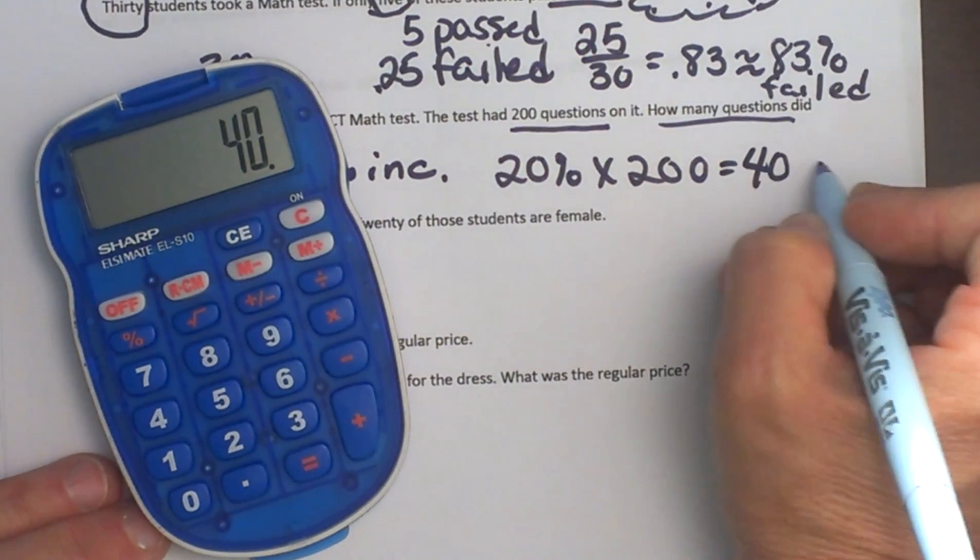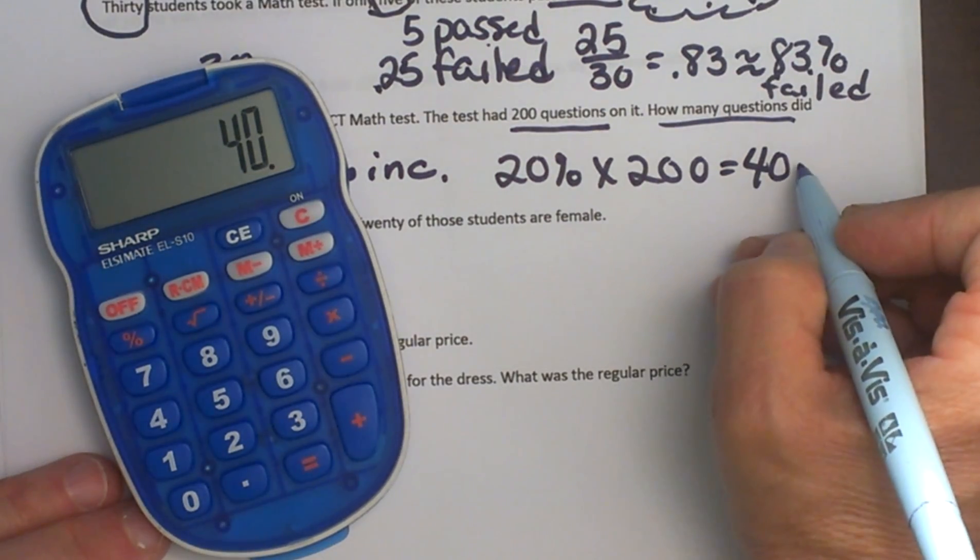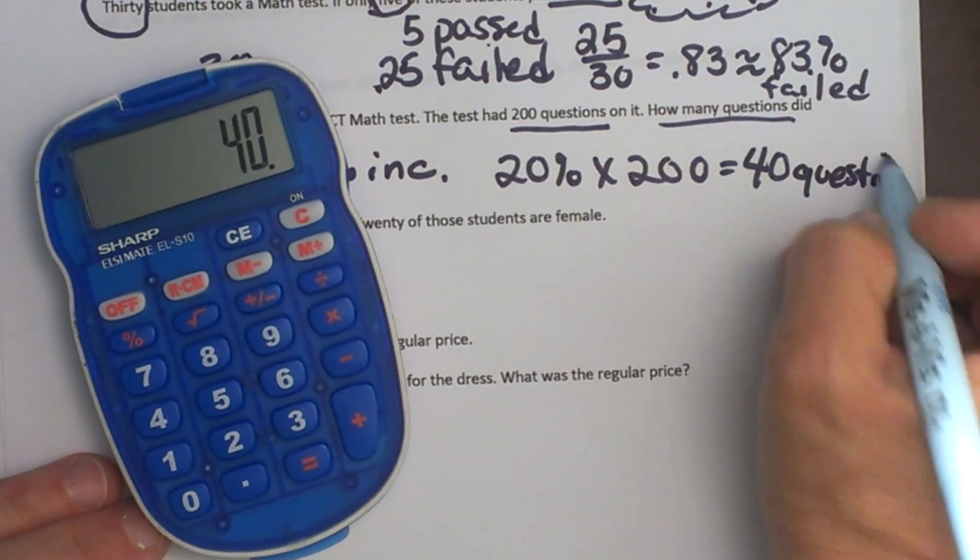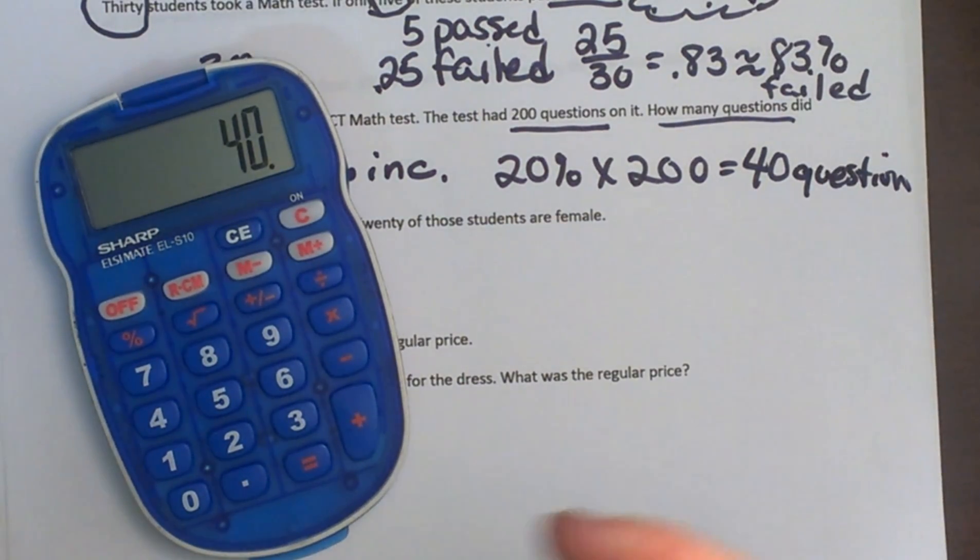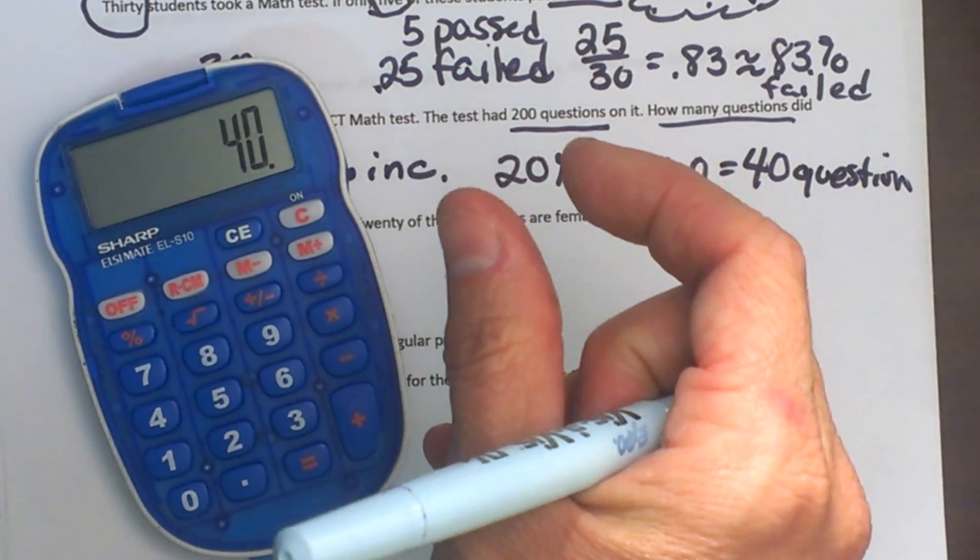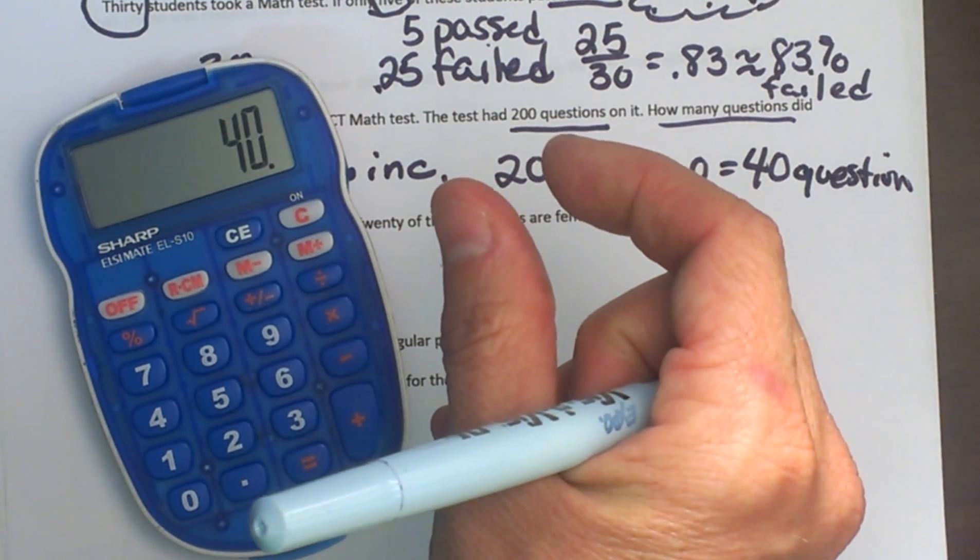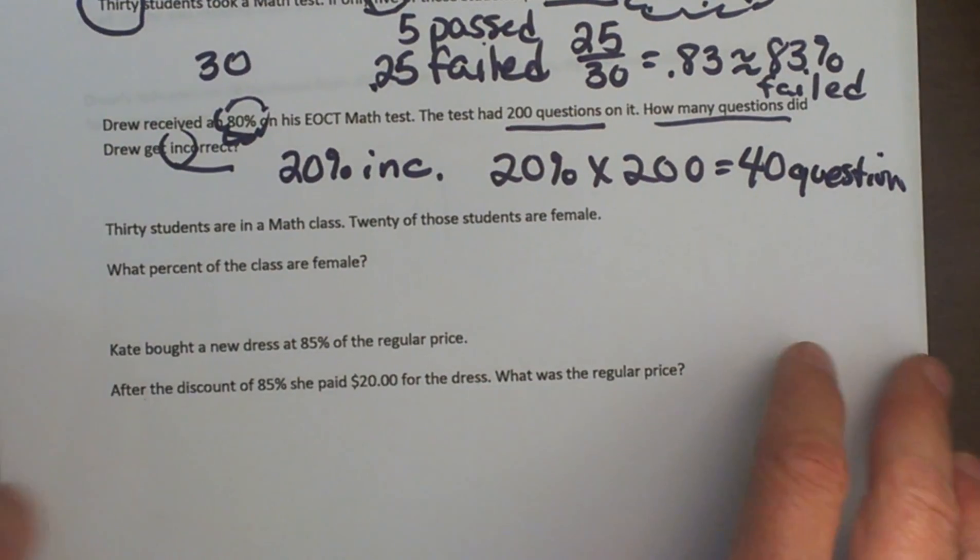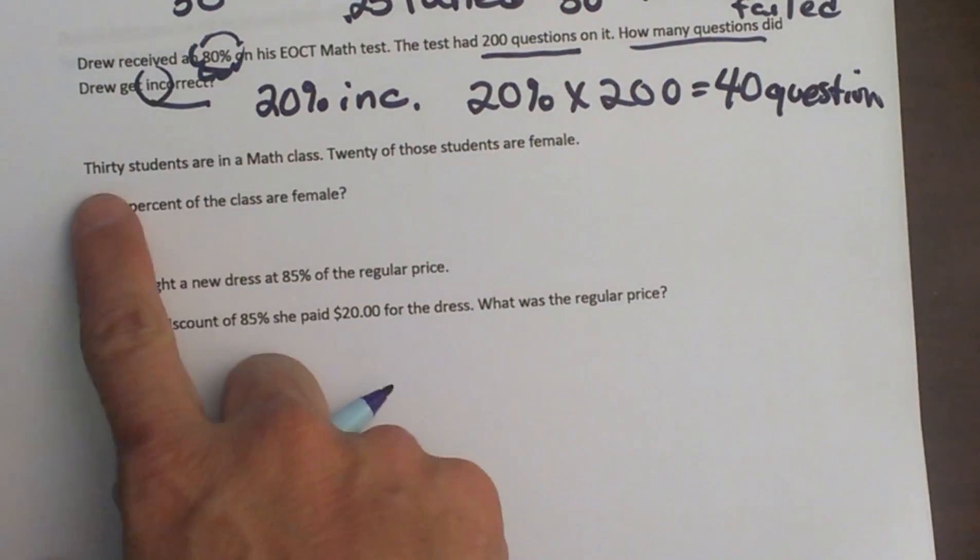So 40, that means he missed 40 questions, because that's 20%. That makes sense, because 20 is 20% of 100. So if you have 20 out of 100, when you have 200 questions, that's going to be 40 questions that he missed.